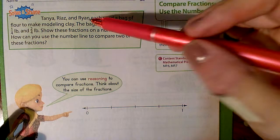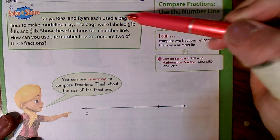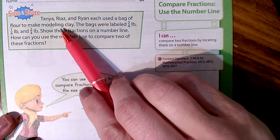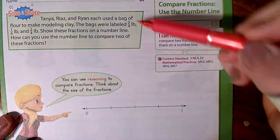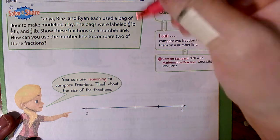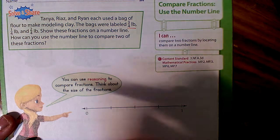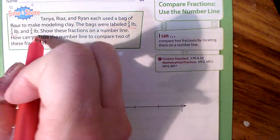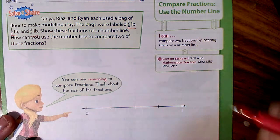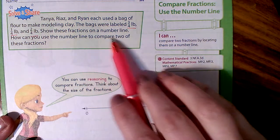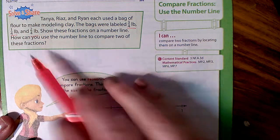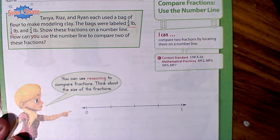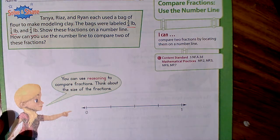Tanya, Riaz, and Ryan each use a bag of flour to make modeling clay. The bags were labeled three-fourths of a pound, one-fourth of a pound, and two-fourths of a pound. Show these fractions on a number line. How can you use the number line to compare two of these fractions?